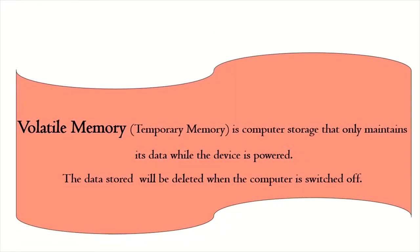RAM is Volatile Memory — temporary memory that is computer storage which only maintains its data while the device is powered. The data stored will be deleted when the computer is switched off.